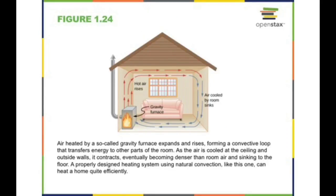Convection currents in a home with a gravity furnace: as air becomes hot it becomes less dense and rises. Cooler air comes down and takes its place, gets heated, and the process repeats. This convection is used to heat the home during winter.